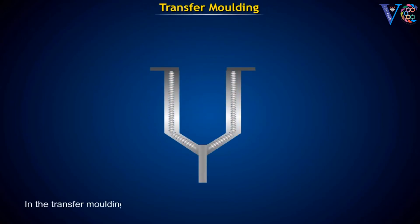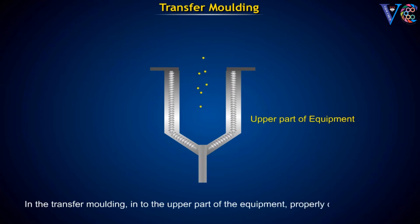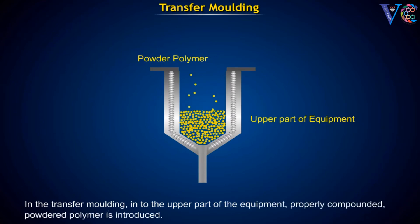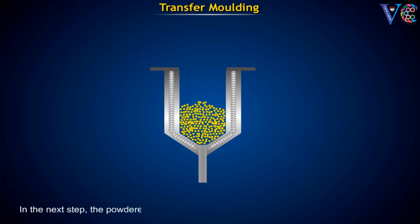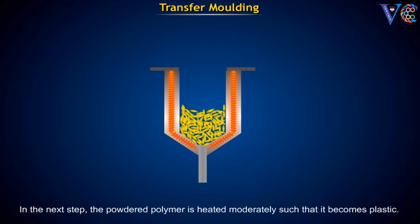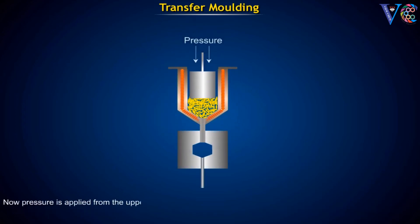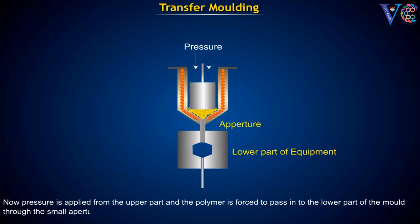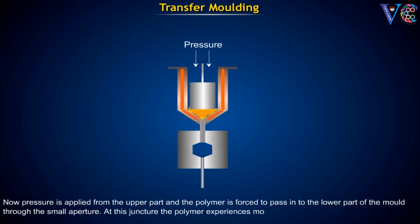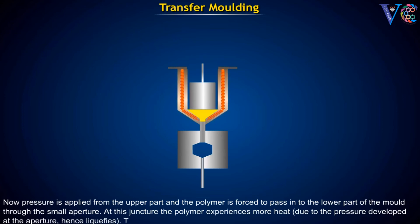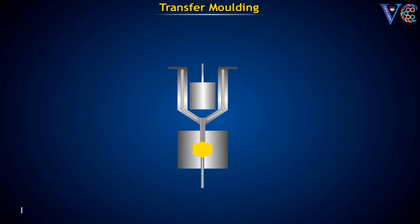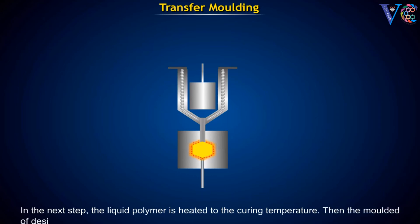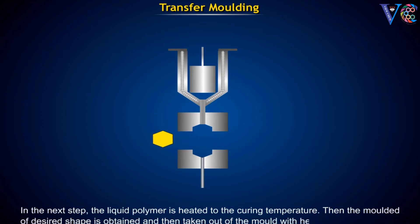In transfer molding, properly compounded powdered polymer is introduced into the upper part of the equipment. The powdered plastic is heated moderately such that it becomes plastic. Pressure is applied from the upper part, and the polymer is forced to pass into the lower part of the mold through a small aperture. At this juncture, the polymer experiences more heat due to the pressure developed at the aperture, and hence liquifies. The liquid polymer passes into the lower part of the mold, is heated to the curing temperature, and the molded polymer of the desired shape is taken out with the help of an ejector pin.